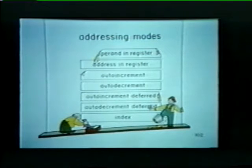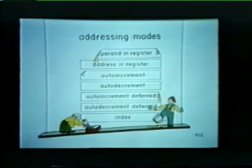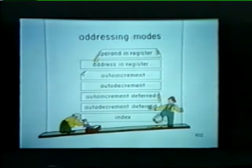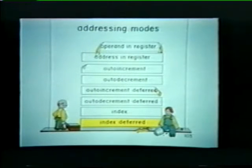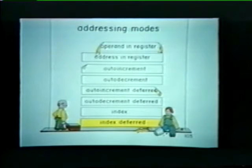That concludes our discussion of the index mode. We've now covered seven of our eight basic addressing modes. The last mode we covered, the index mode, calculates the operand's address from two components: a base value and an index word. There's also a deferred form of the index mode, which is the last of our eight basic addressing modes.